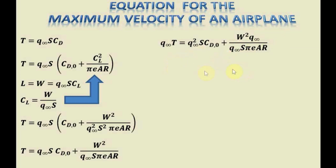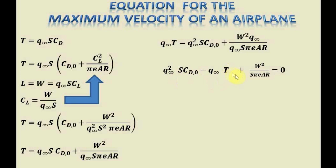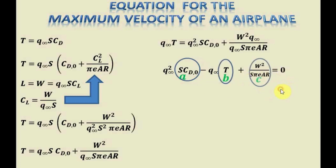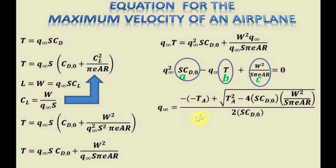We rearrange the equation into a clean quadratic form. To solve this quadratic equation in terms of dynamic pressure, we consider surface area times the zero-lift drag coefficient as a, the negative thrust available as b, and the third term as c. Solving gives dynamic pressure equal to negative b plus the square root of b squared minus 4ac, all divided by 2 times a.